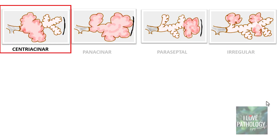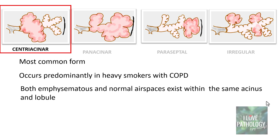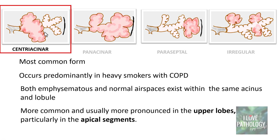Centriacinar emphysema is the most common form, occurring predominantly in heavy smokers with COPD. Both emphysematous — dilated — and normal airspaces coexist within the same acinus and lobule. It is more commonly and more pronounced in the upper lobes of the lung, particularly the apical segments.